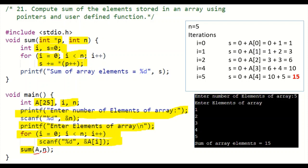In the post-increment operation, during execution its value will not change — its value will change only after the execution. So initially, star p plus plus refers to the first element of the array, that is a of zero. In the next iteration it will increment to a of one, and this process continues. So in each iteration the operation happening is like this.